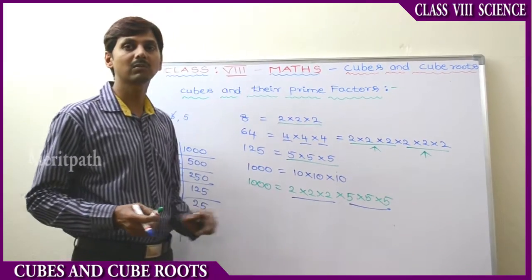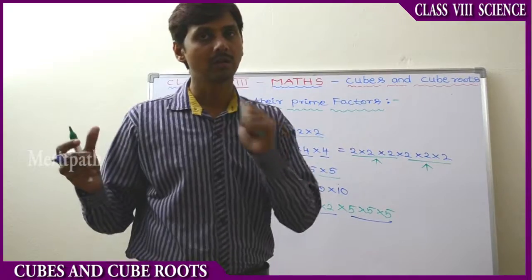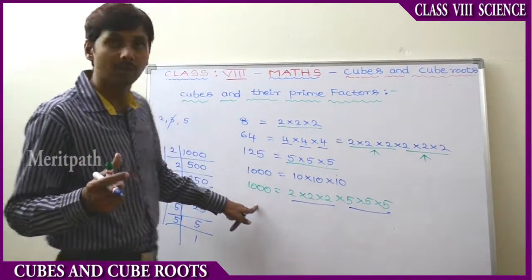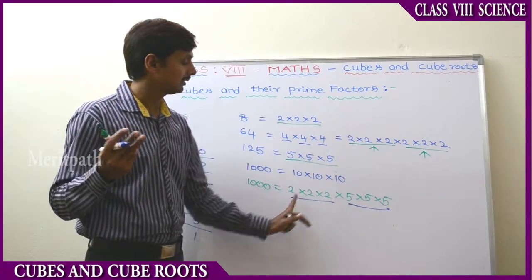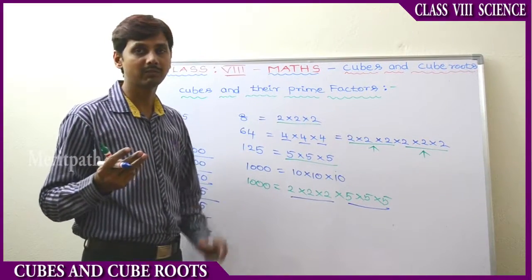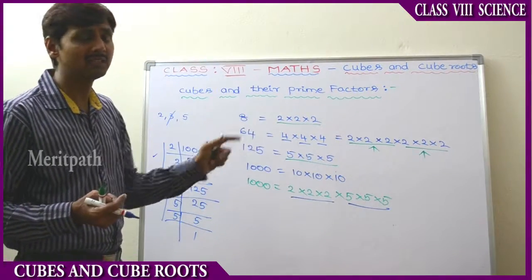So what we understood: whatever prime factors we get for a perfect cube appear three times. 2³ × 5³, and again, any perfect cube we get in the same manner.